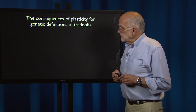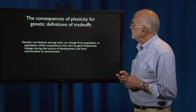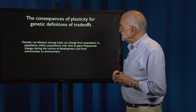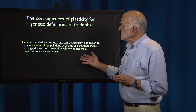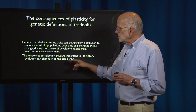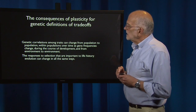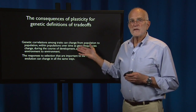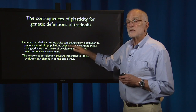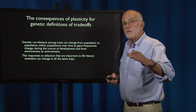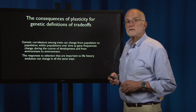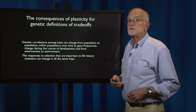What are the consequences of plasticity for genetic definitions of trade-offs? Genetic correlations among traits can change from population to population, within populations over time as gene frequencies change, and from environment to environment. Responses to selection important for life history can also change in all the same ways. This isn't just about fruit flies in the laboratory — it also applies to the demographic transition and the industrial revolution, which have changed the whole landscape of selection operating on contemporary human beings.